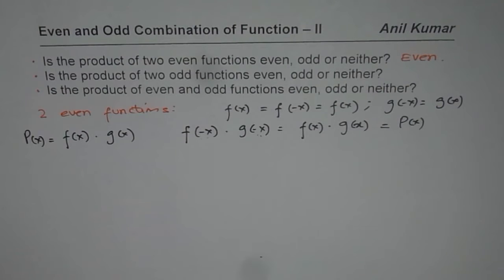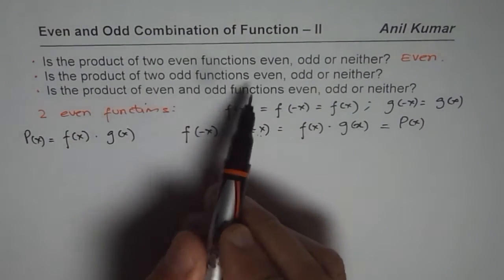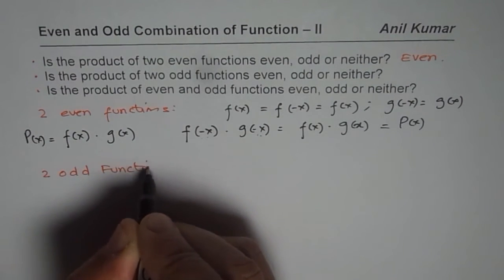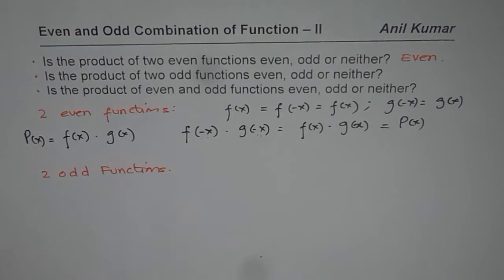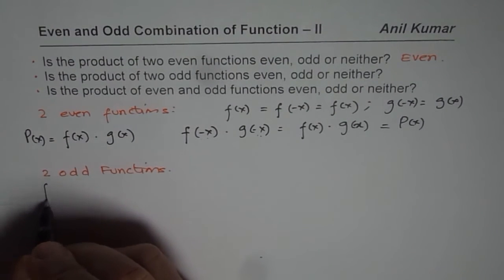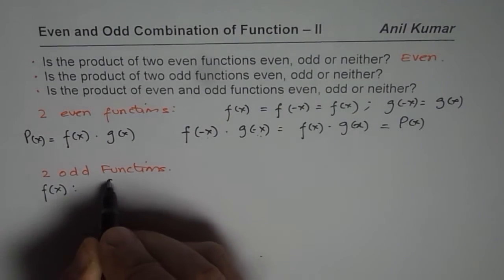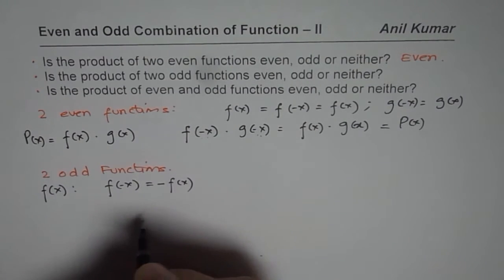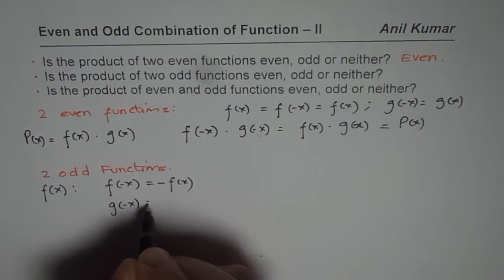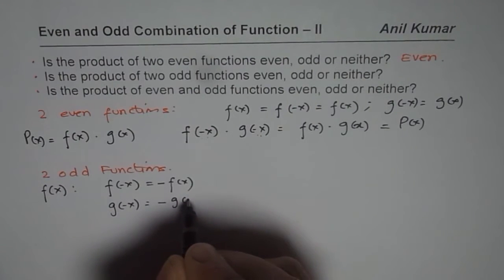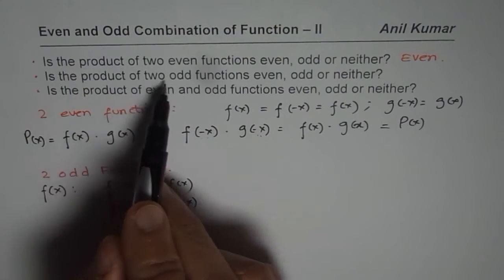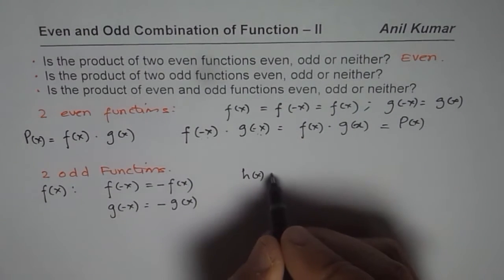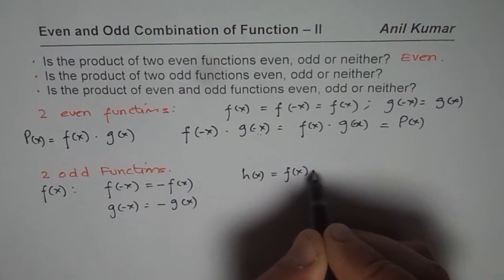Now let us take the second example: the product of two odd functions. Odd functions means that if f of x is an odd function, then f of minus x should equal minus f of x. And g of minus x equals minus g of x. We are considering h of x, the product of two odd functions, so h of x equals f of x times g of x.